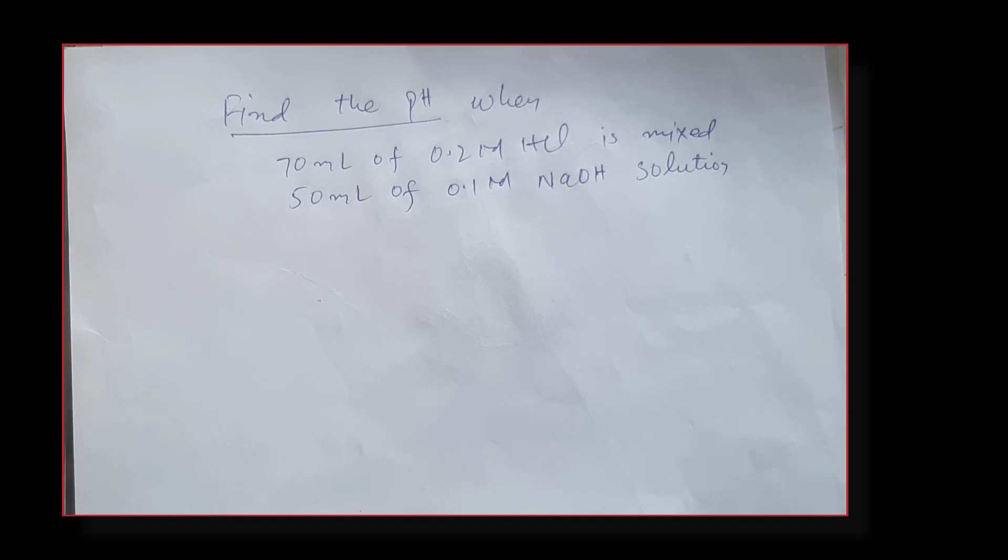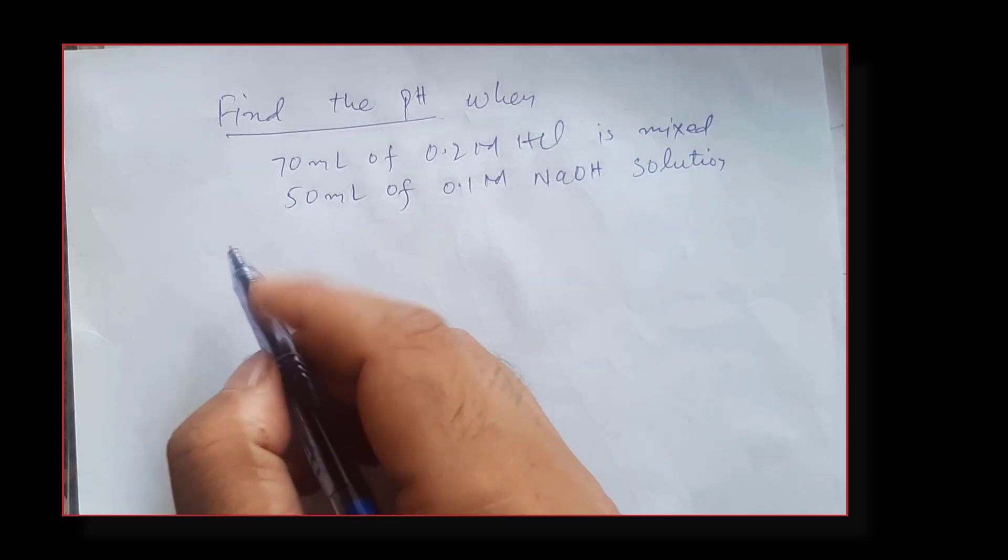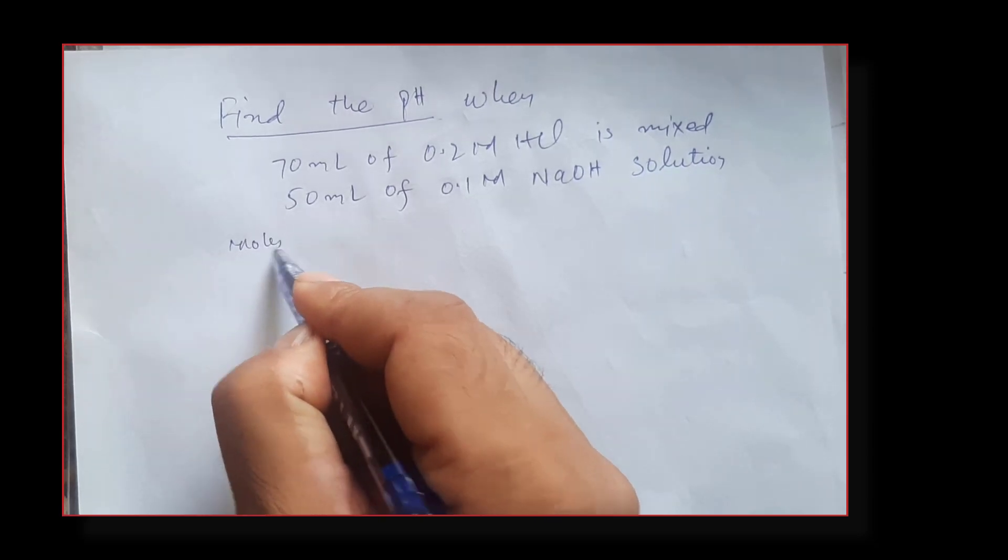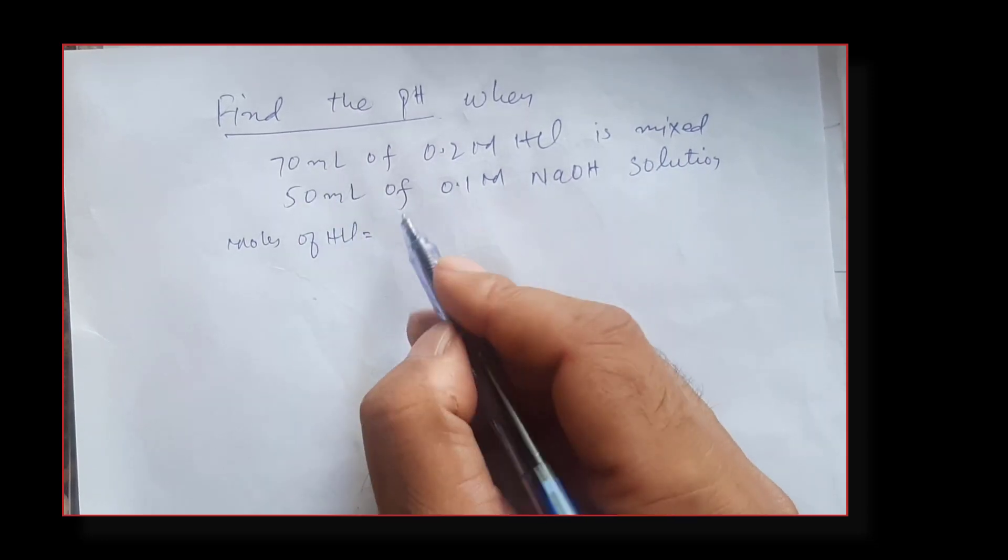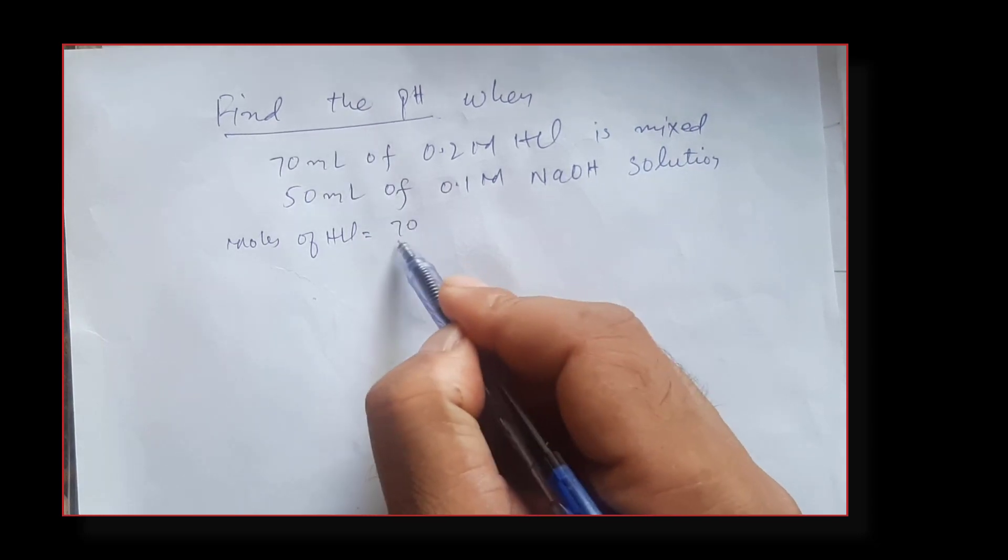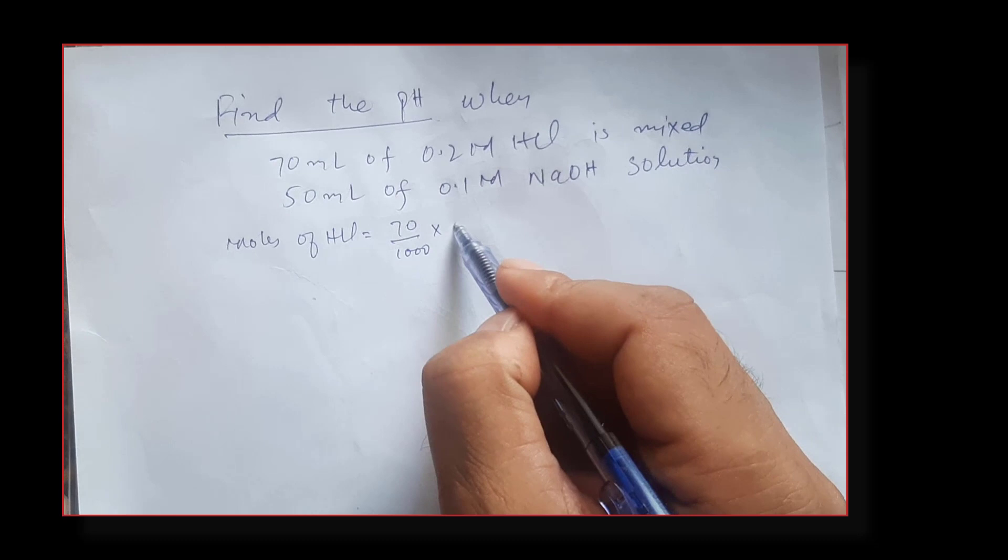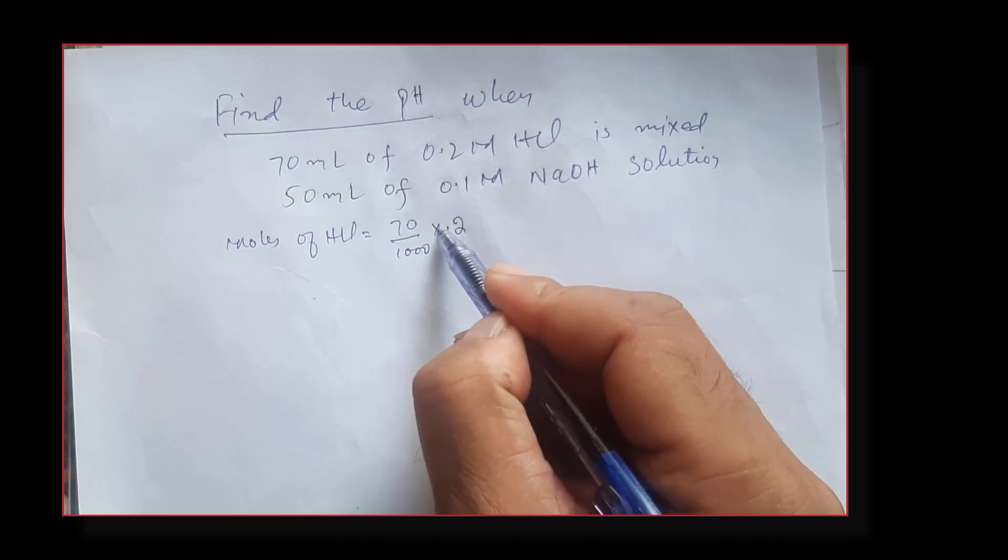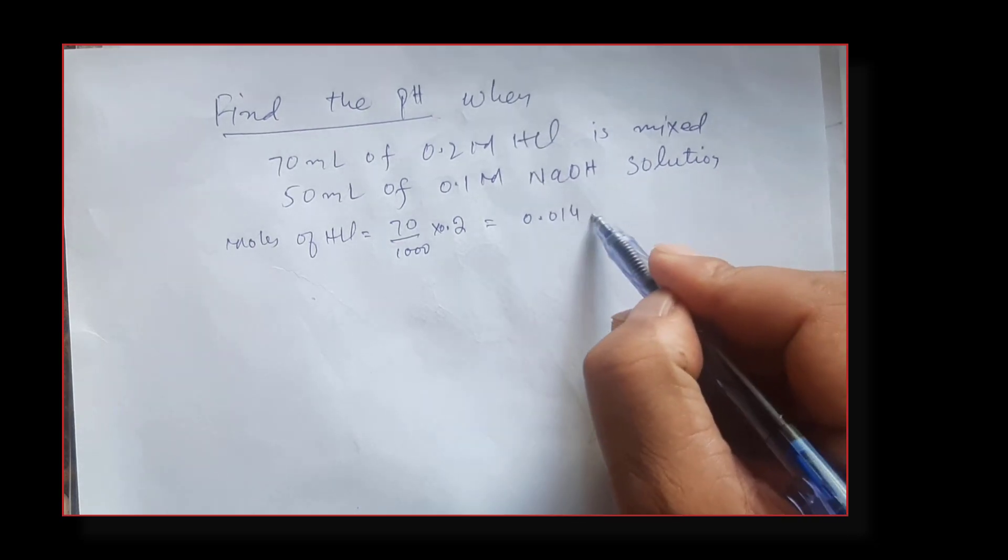Let's calculate the number of moles of HCl and sodium hydroxide. Number of moles of each species can be calculated by multiplying the volume of the solution with its concentration. So moles of HCl: volume is 70 ml, convert to liters by dividing by 1000, multiply by molarity 0.2, and this gives us 0.014 mol.